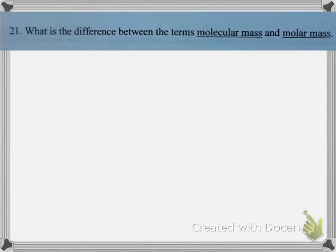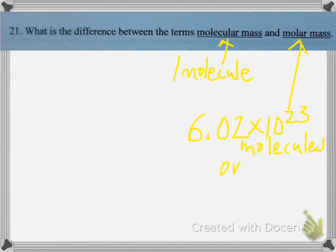Question 21: what is the difference between the terms molecular mass and molar mass? Molecular mass refers to the mass of one molecule — units in AMUs. Molar mass refers to the mass of one mole of molecules, which is 6 × 10²³ molecules, or one mole — units in grams per mole. So molecular mass refers to a single molecule, while molar mass refers to the mass of 6.02 × 10²³ atoms or molecules.